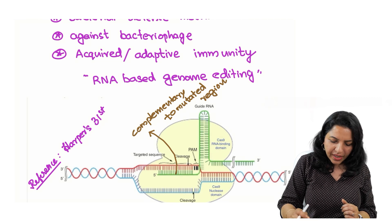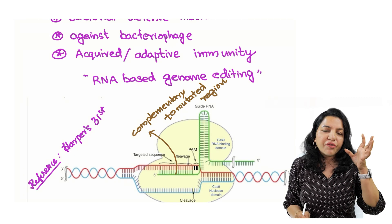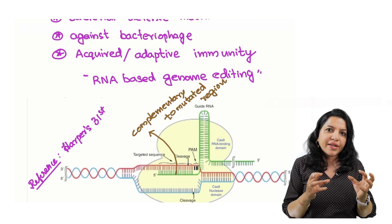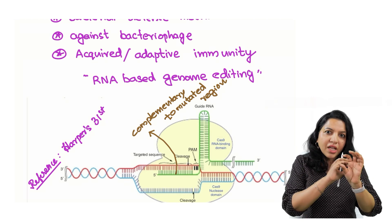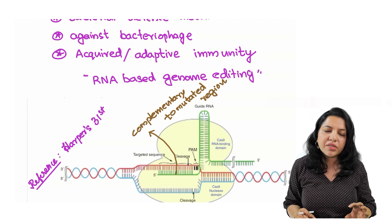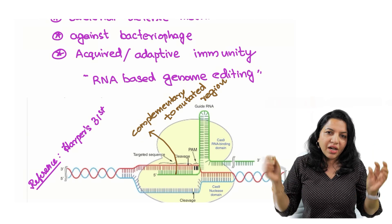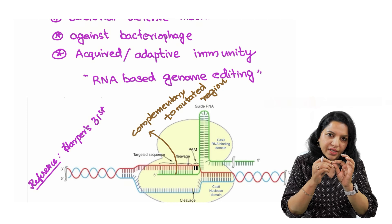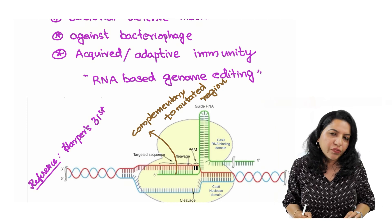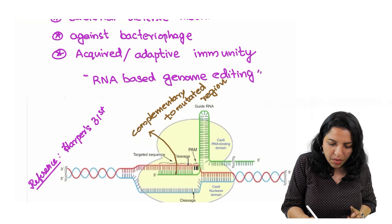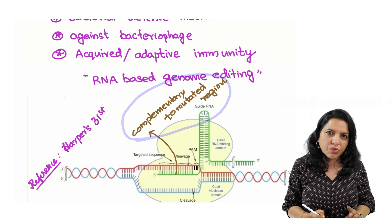Now to this guide RNA, this guide RNA is added to CRISPR, which is a long palindromic sequence seen inside the bacteria. And what is the peculiarity of this guide RNA? This guide RNA is complementary to the mutated region.